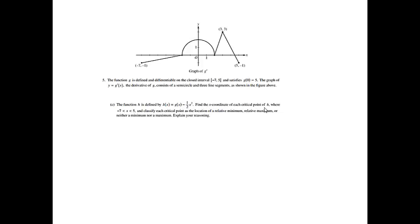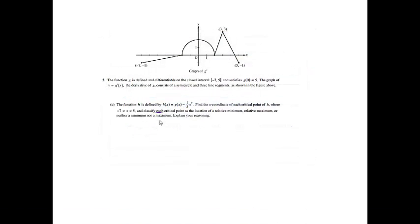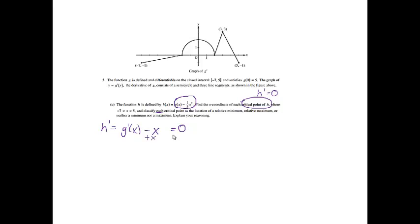Find the x-coordinate of each critical point of h, where x is between negative 7 and 5, and classify each critical point as a relative minimum, relative maximum, or neither. Explain your reasoning. Critical points of h occur where h prime equals 0. The derivative of h is g prime of x minus x. We need to figure out where that equals 0, so we get g prime of x equals x.